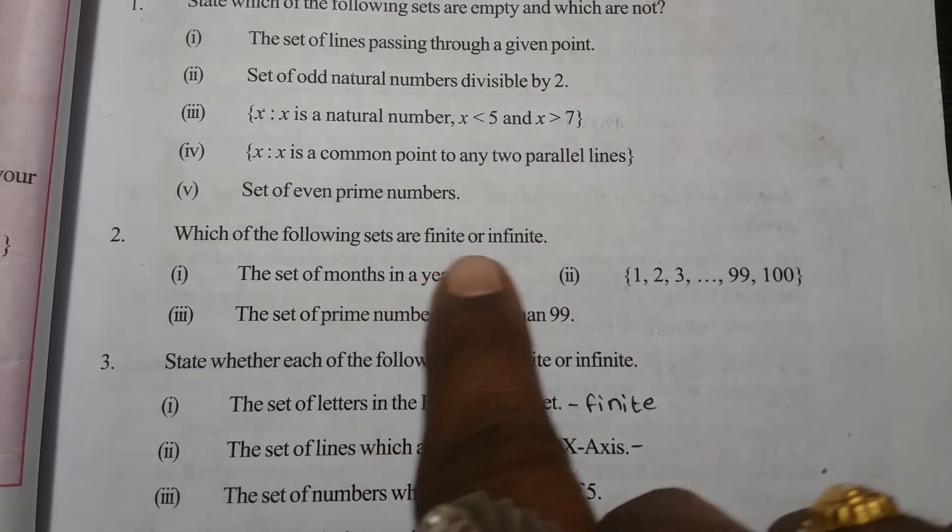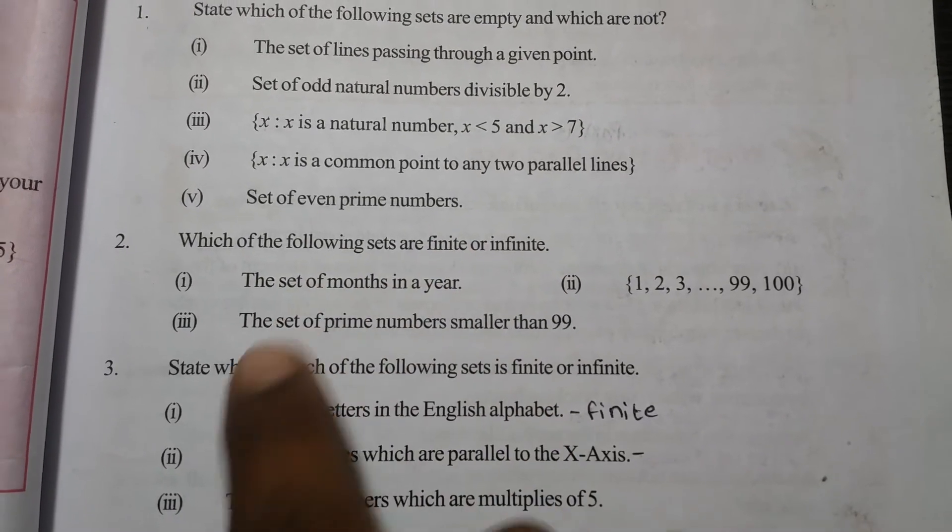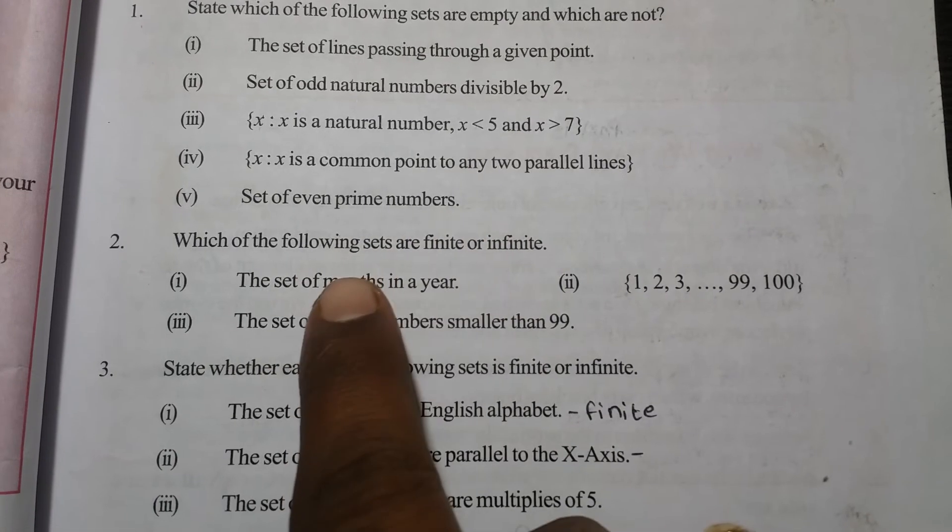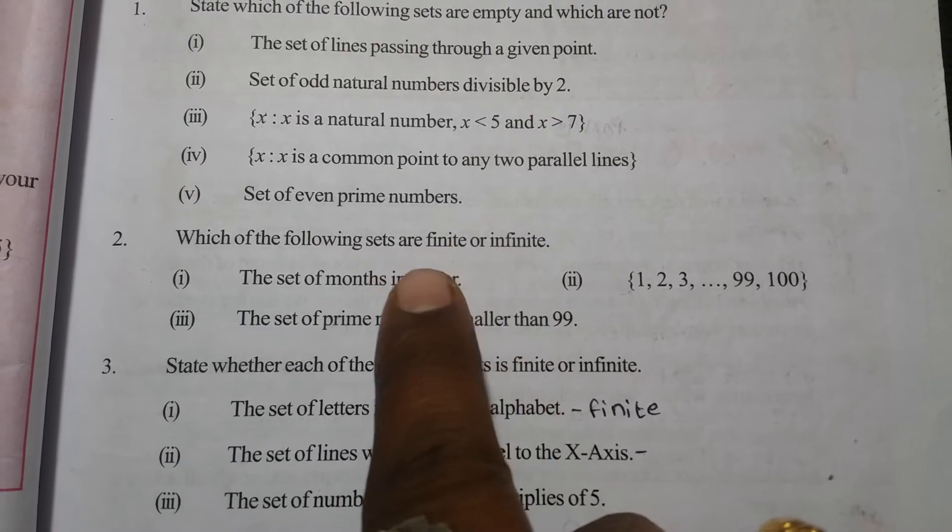The set of months in a year. A year contains 12 months. We know the 12 months, so we can count the number of elements present in the set. Therefore, it is a finite set.